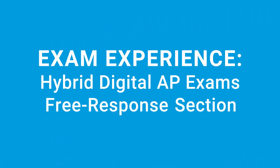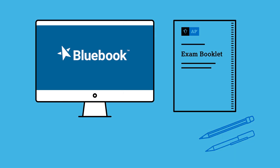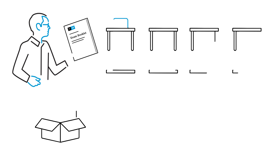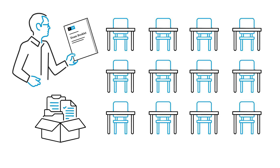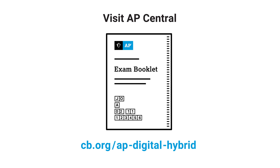For hybrid digital AP exams, the Section 2 free response exam experience is different than fully digital exams. In a hybrid digital AP exam, you will view the prompt, the question and instructions in Bluebook, and write your response in a paper, subject-specific free response exam booklet. Your proctor will distribute the exam booklets to you at the beginning of the exam and explain how to complete the front cover. You can view sample free response booklets for each hybrid digital AP exam subject at cb.org/ap-digital-hybrid.